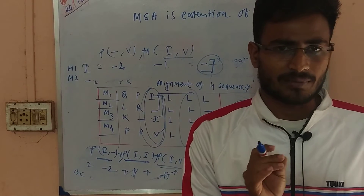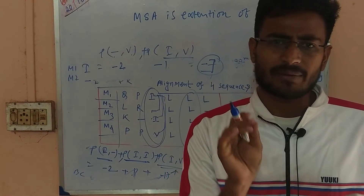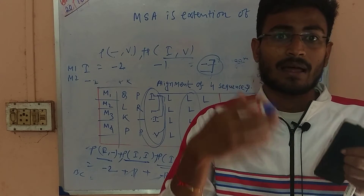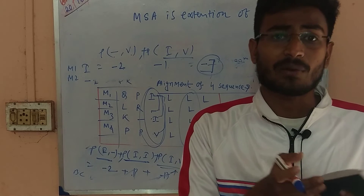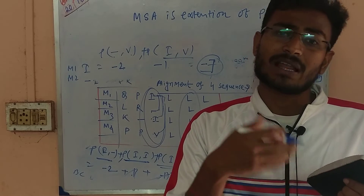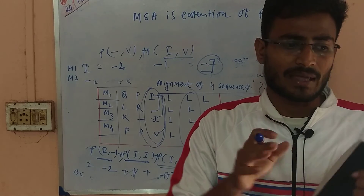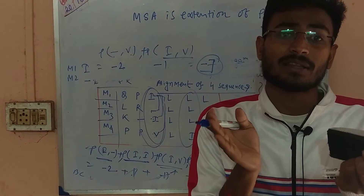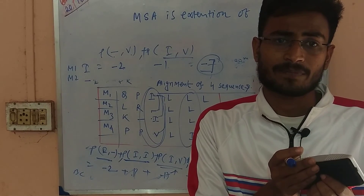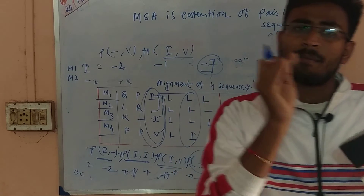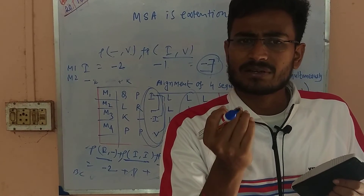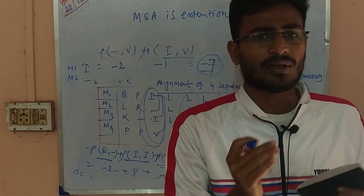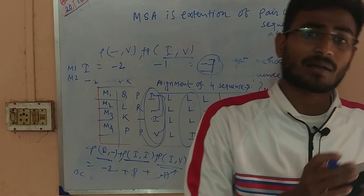Multiple sequence alignment is an important long-answer topic. Compared to pairwise alignment, multiple sequence alignment is more time-efficient when handling more than 3 or 4 sequences. The key methods are the Sum of Pairs method, which uses a dynamic programming approach, and the progressive method.